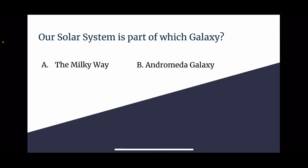Let's practice. Our solar system is part of which galaxy, A or B? A being the Milky Way, B being Andromeda galaxy. Well, the correct answer would actually be A, the Milky Way.